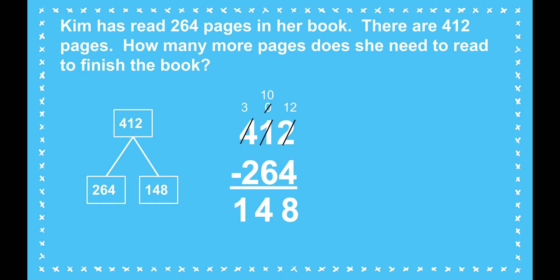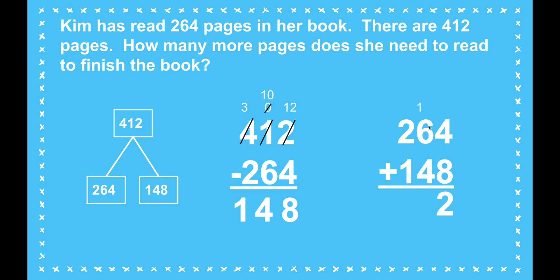I know this is a reasonable answer, but I want to make sure that my subtraction is correct. So I'm going to put the parts back together — the part she's read and the part she still needs to read — and that should give me the total. 4 plus 8 is 12; I lined up my place values, that's 12, which gives me a new 10. 6 plus 4 is 10, plus 1 more makes 11 — another new 100. 2 plus 1 plus 1 is 4. My subtraction was correct because I got back to the total by putting the parts together.